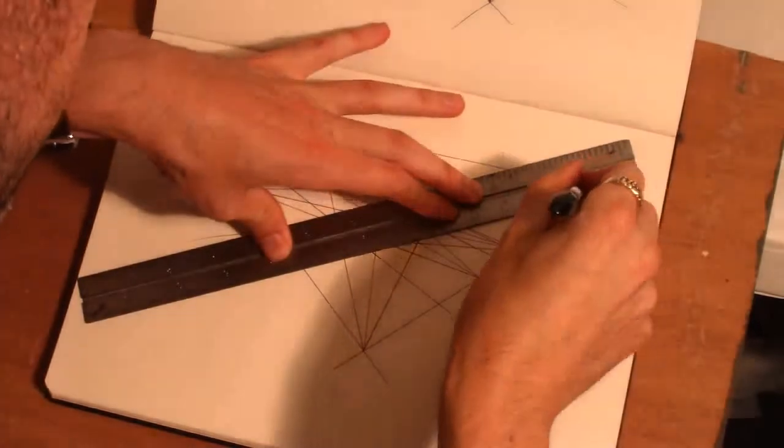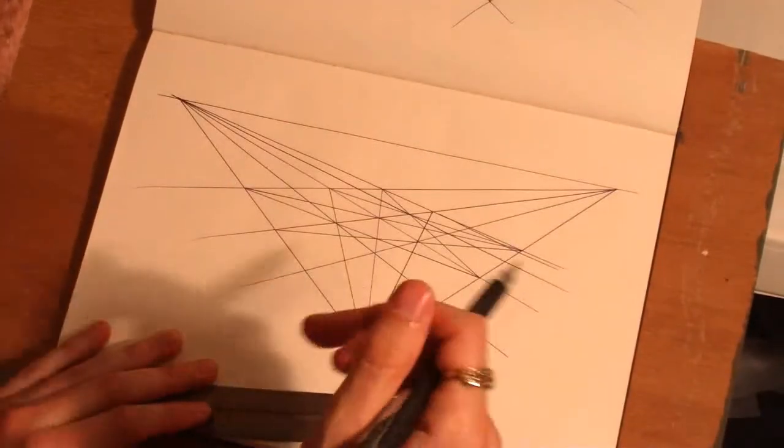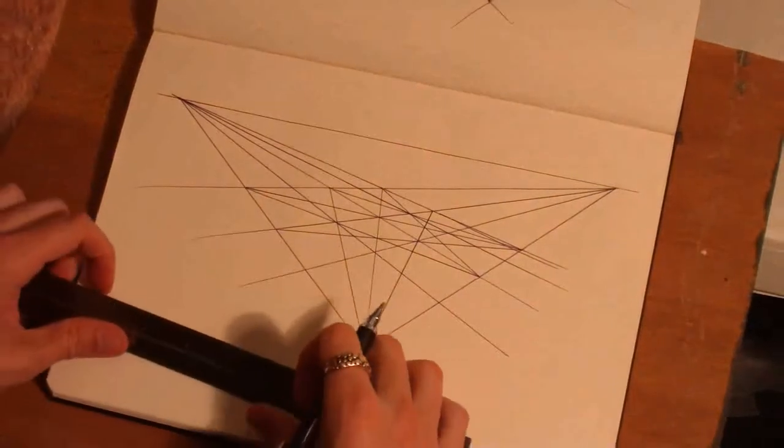You can make this grid as dense or as compact as you want. And it'll depend on what you're eventually trying to represent.